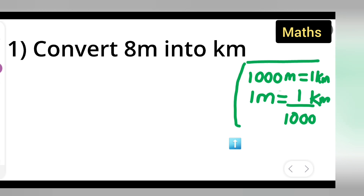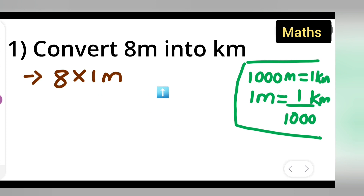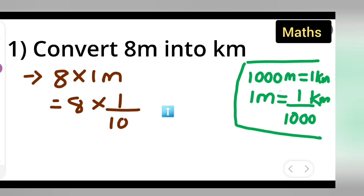Now, remember this conversion. Here, we write down 8 multiplied by 1 meter. When you multiply 8 by 1, you get 8 meters. Now we have to convert this meter, so we write: 8 multiplied by 1 upon 1000 kilometer, because 1 meter equals 1 upon 1000 kilometer.